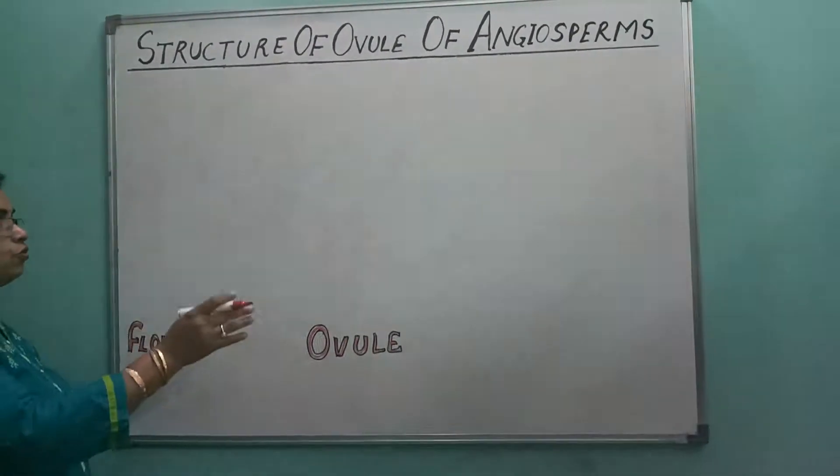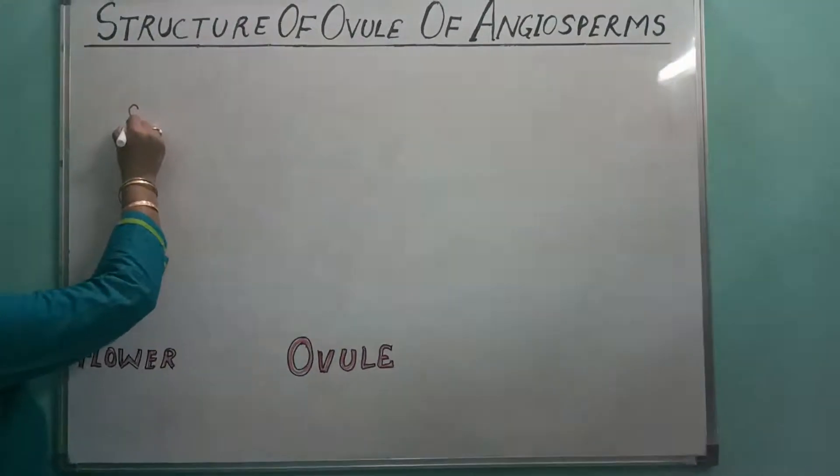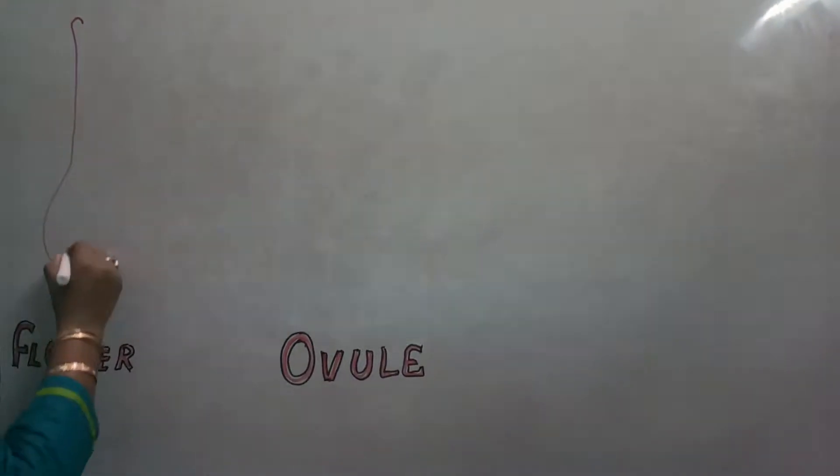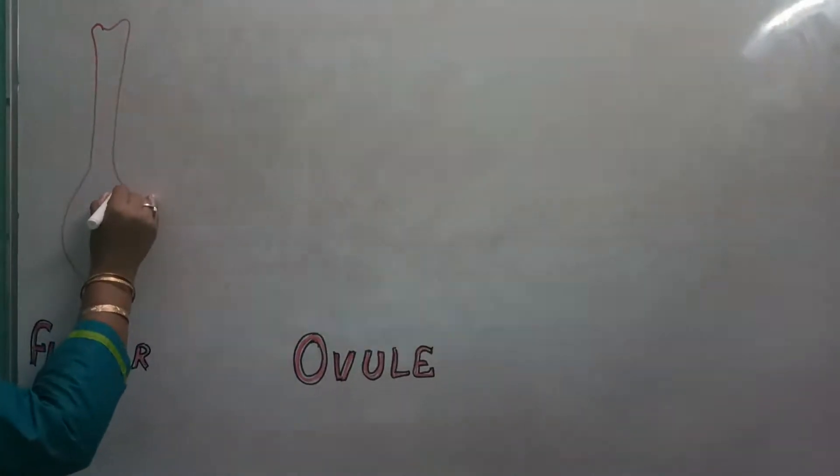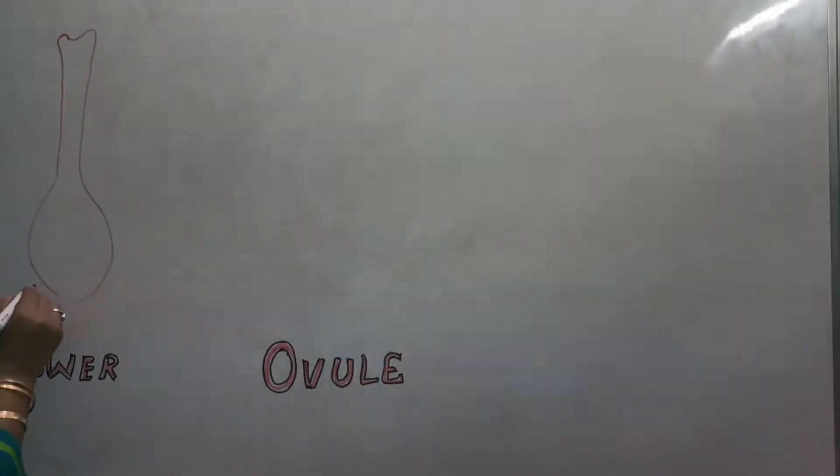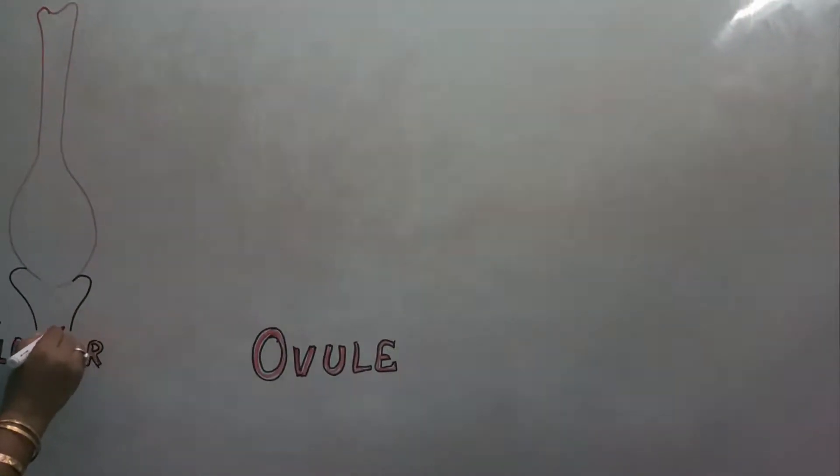So I'm going to draw the diagram of the longitudinal section of flower. This is the internal part of the flower. I just want to show you where this ovule is located. So this is the female part of a flower. Going to make a thalamus on this one. The thalamus is the place where all the floral parts are attached.